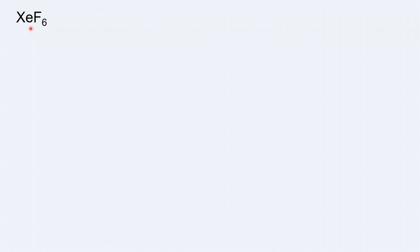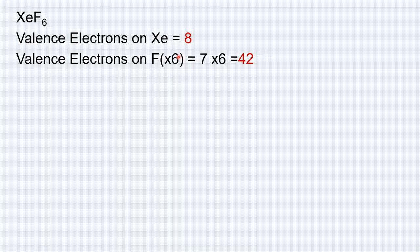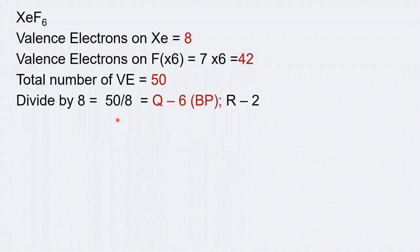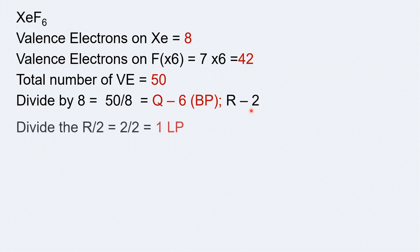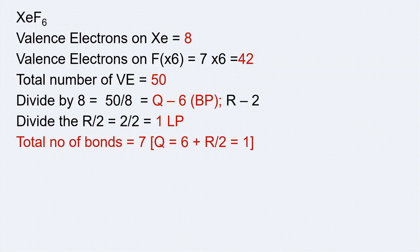Similarly, let us do the same calculations for XeF6. Xenon has 8 valence electrons, fluorine has 7 and there are 6 fluorine atoms, so that adds up to 42. The total is 8 plus 42 equals 50. Dividing 50 by 8, the quotient is 6 and the remainder is 2. Dividing the remainder by 2 gives 1 lone pair. So we have 6 bond pairs and 1 lone pair, giving a total of 7 bonds.